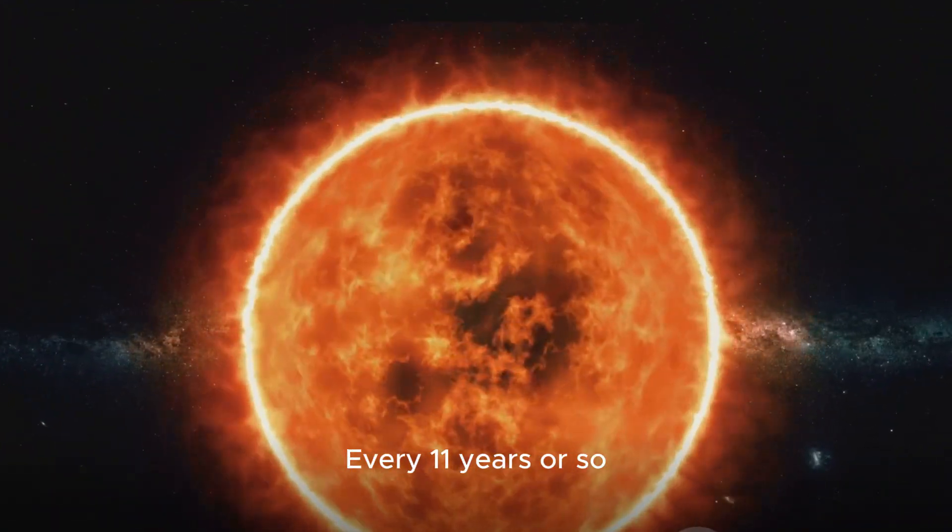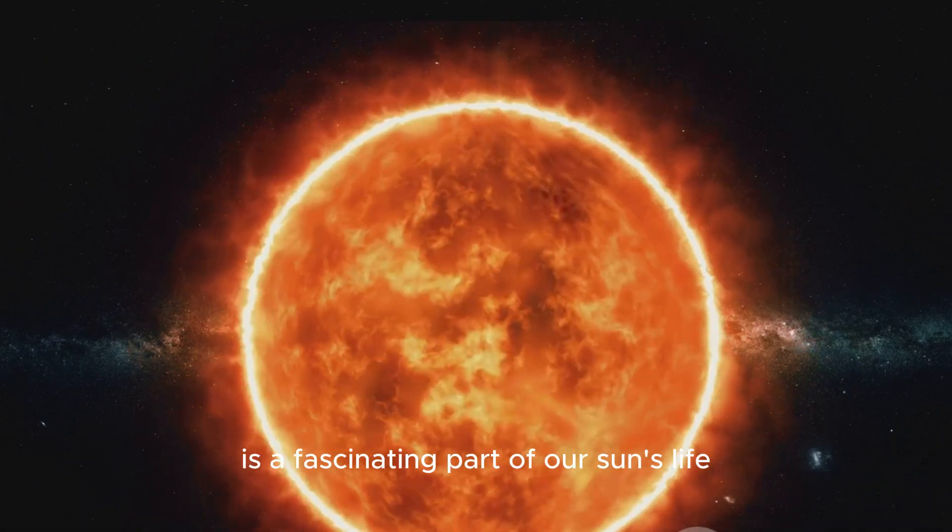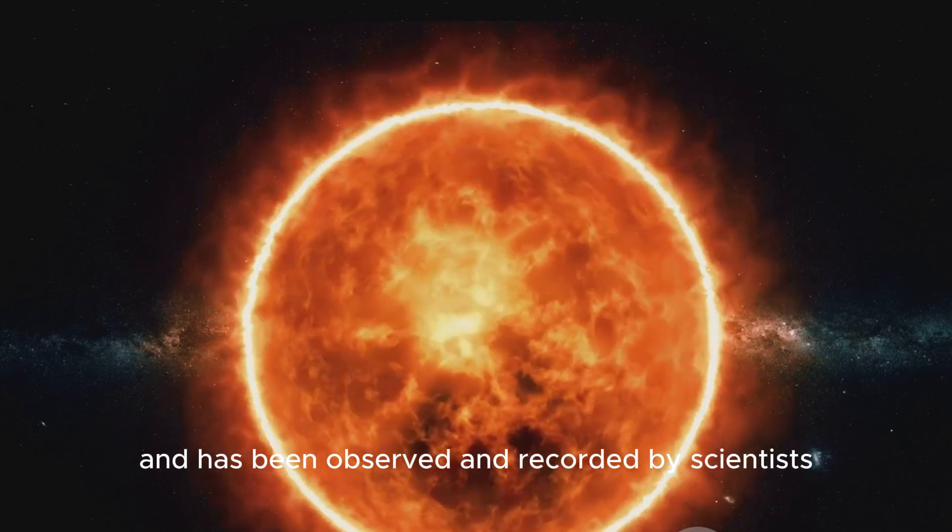Every 11 years or so, the sun's magnetic field undergoes a dramatic shift. This event, known as the solar cycle, is a fascinating part of our sun's life and has been observed and recorded by scientists for centuries.